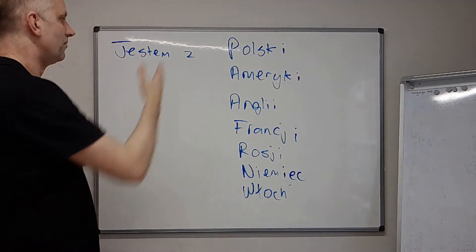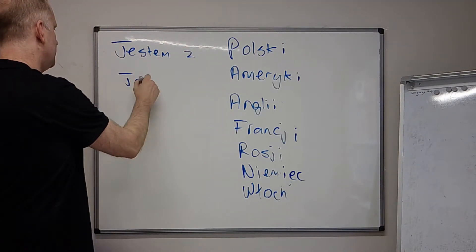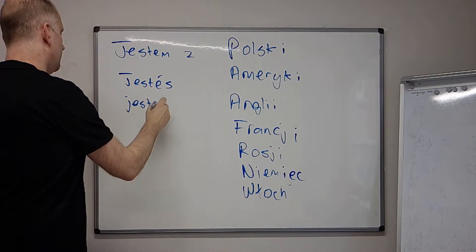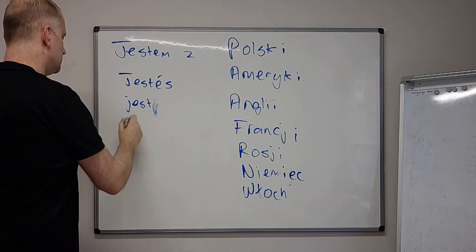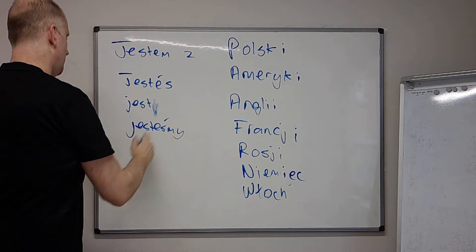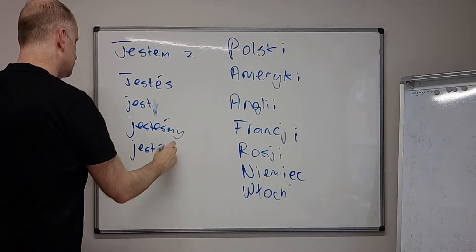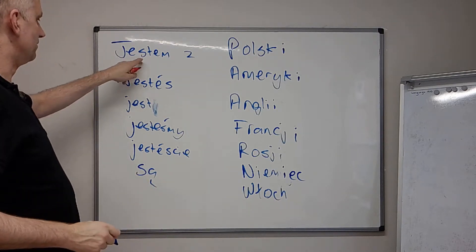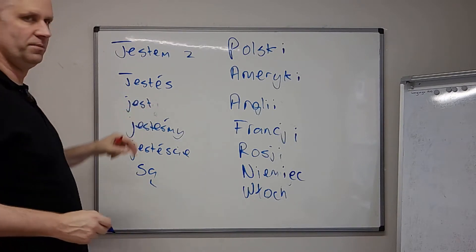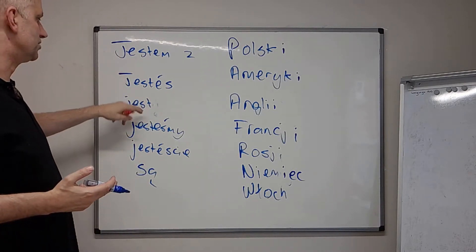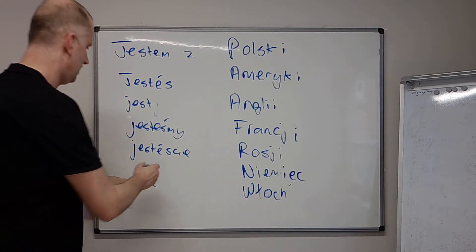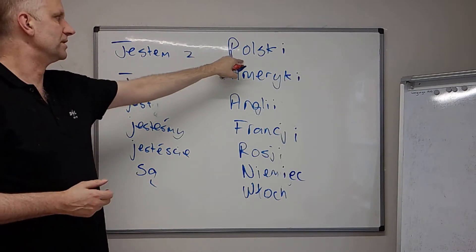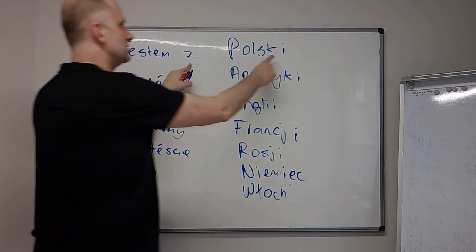So if you want to say 'I am from', 'you are from', 'he or she is from', 'we are from', 'you (plural) are from', or 'they are from' any of these countries — you just use the correct form of the verb 'to be' (być): jestem, jesteś, jest, jesteśmy, jesteście, są — and then ze followed by the country, bearing in mind any necessary changes you have to make.